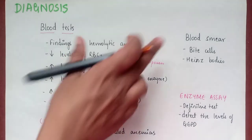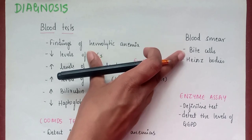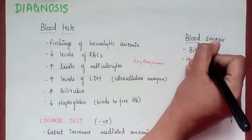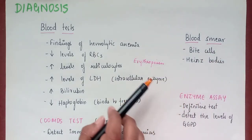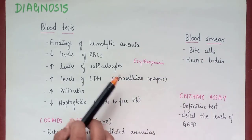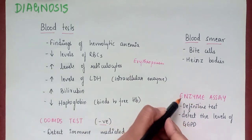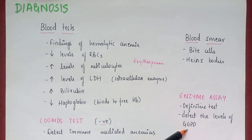On blood smear we see bite cells and Heinz bodies. There is also a definitive test for G6PD deficiency — the enzyme assay — which is the definitive test and directly detects the level of G6PD in the blood.